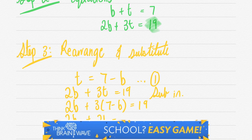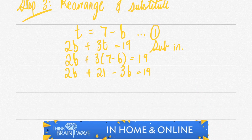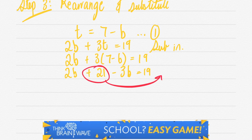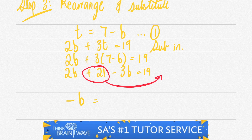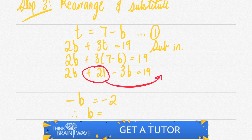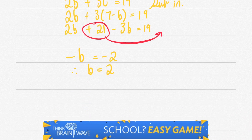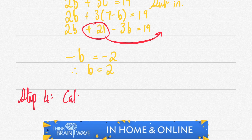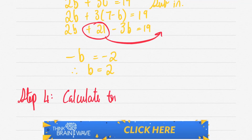We then expand: three times seven is 21, and three times minus b is minus 3b, giving us 2b plus 21 minus 3b equals 19. We take 21 across to the right-hand side: 2b minus 3b gives minus b, and 19 minus 21 gives minus 2. Dividing both sides by negative one, we get b equals 2.